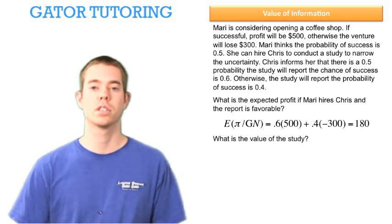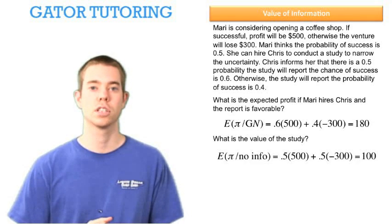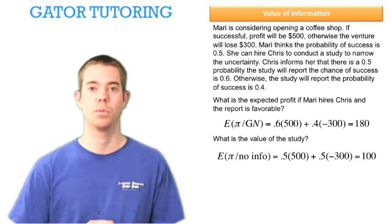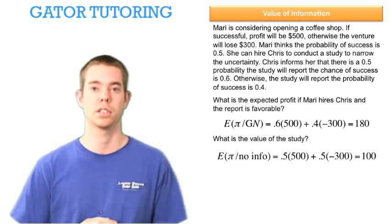The next question is, what is the value of the study? Well we already solved for one piece of the puzzle, so now we need to go and fill in the rest. First, let's solve for the expected profit with no information. This is the 50% chance Mary thinks she'll be successful, plus the 50% chance she thinks she'll be unsuccessful, giving us an expected profit with no information of $100.